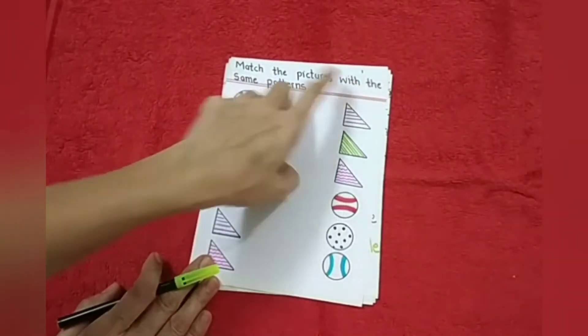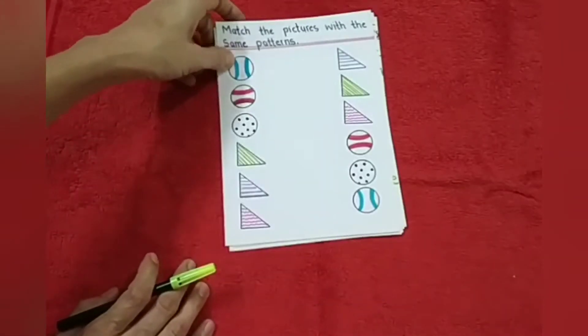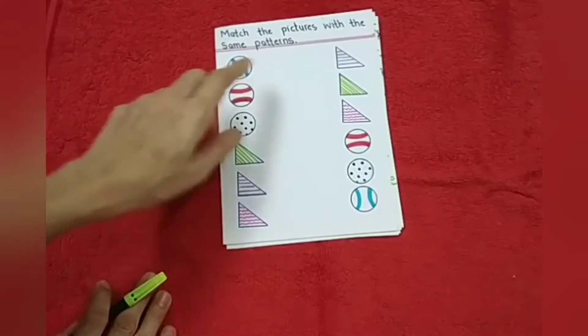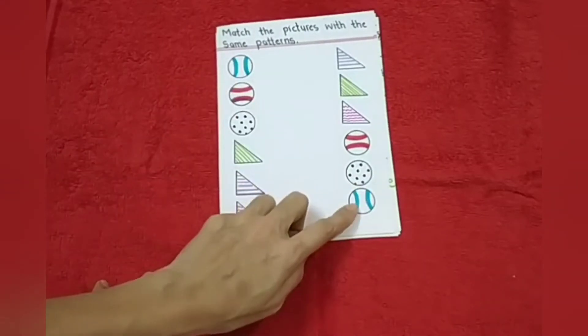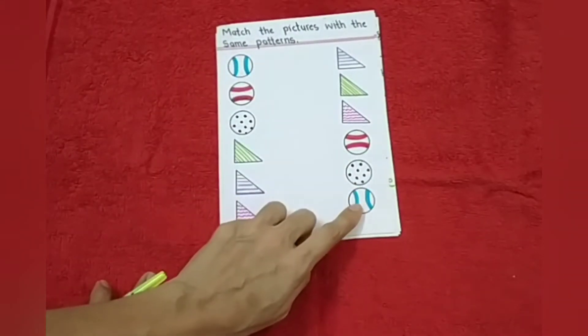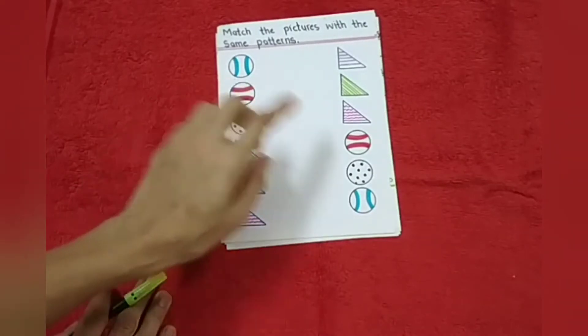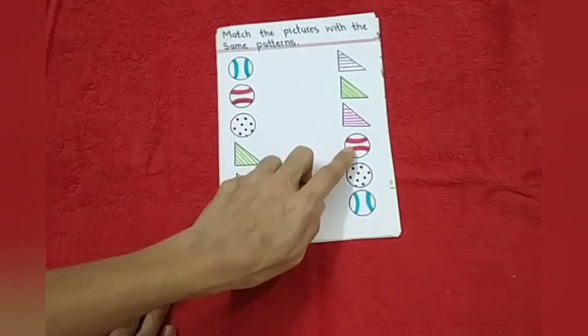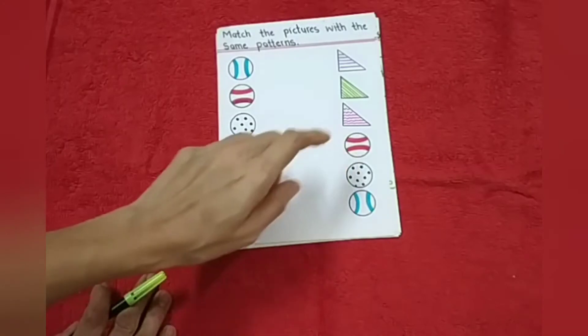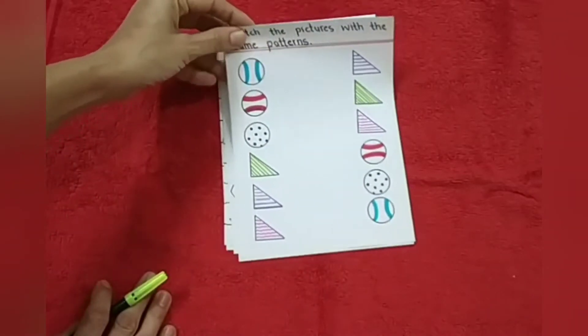Like here, match the pictures with the same pattern. Here I can see this ball and this ball. They are with the same pattern. Child has to just match it. Same way, this ball and this ball, it's with the same pattern. They have to match. This way they can do this worksheet.